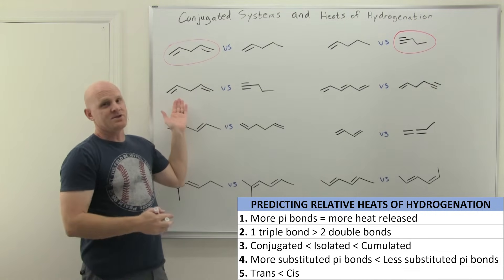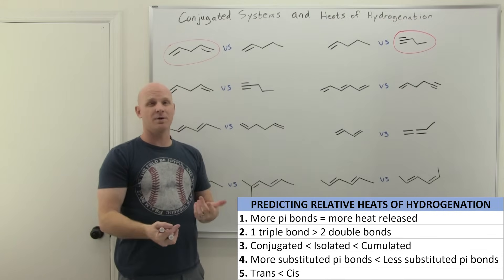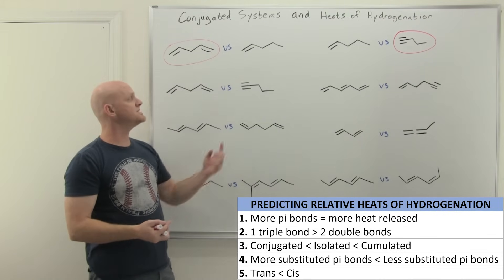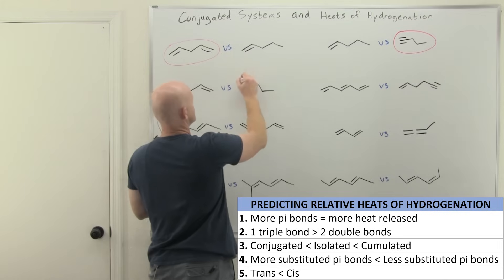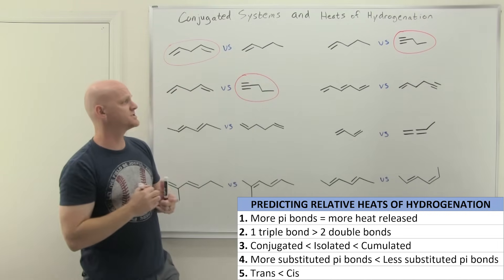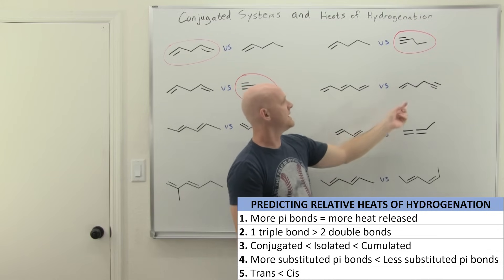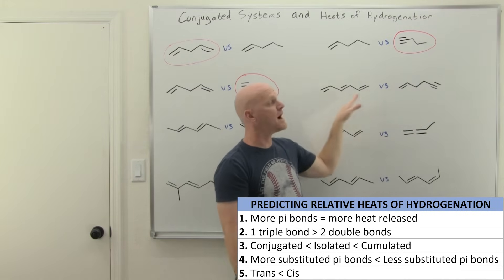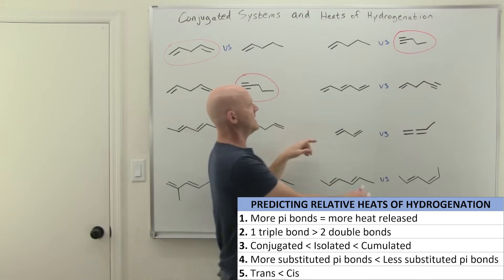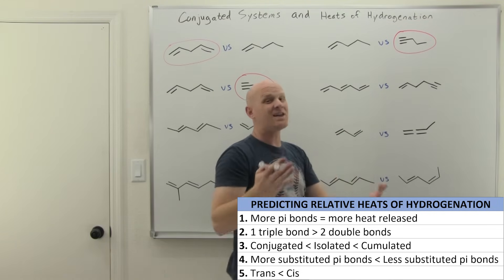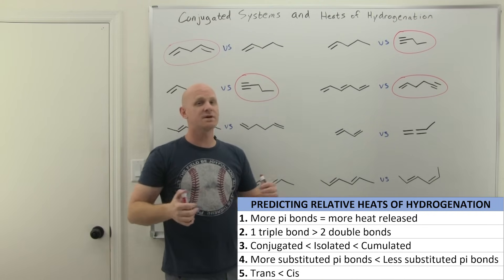In the next example, both have two pi bonds on each side, so rule one doesn't help. Moving to rule two: reducing a triple bond releases more energy than reducing two separate double bonds. So the alkyne has the higher heat of hydrogenation. Similarly, when comparing three total double bonds versus one double bond and one triple bond — same total pi bonds — the triple bond criterion again determines that the alkyne-containing compound releases more energy.